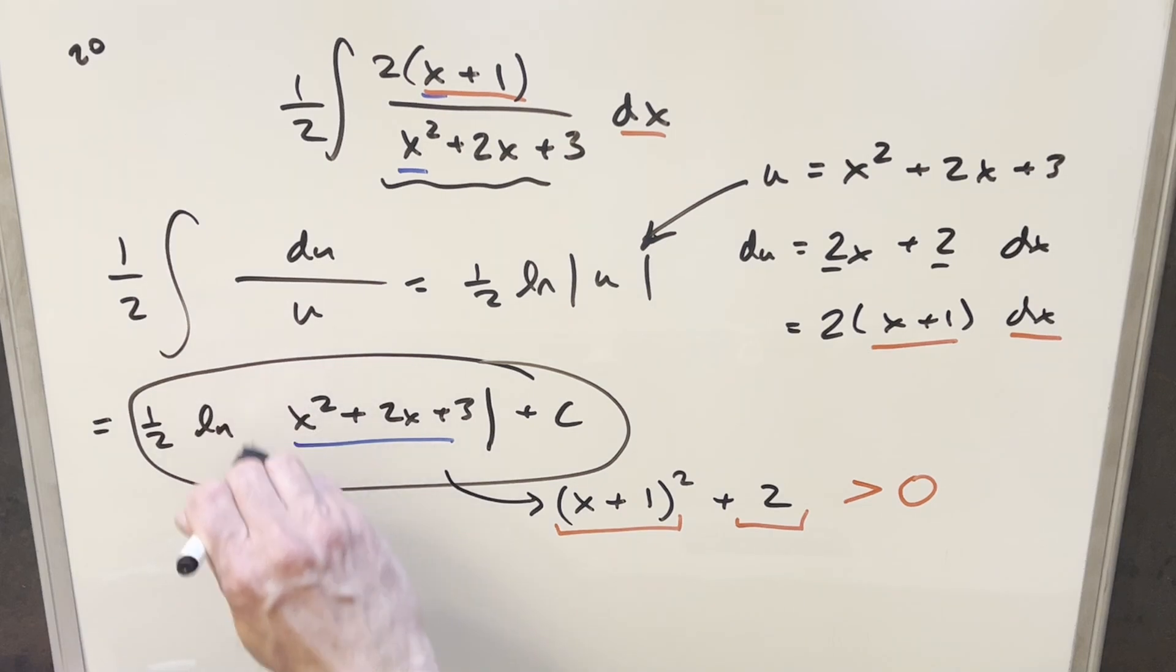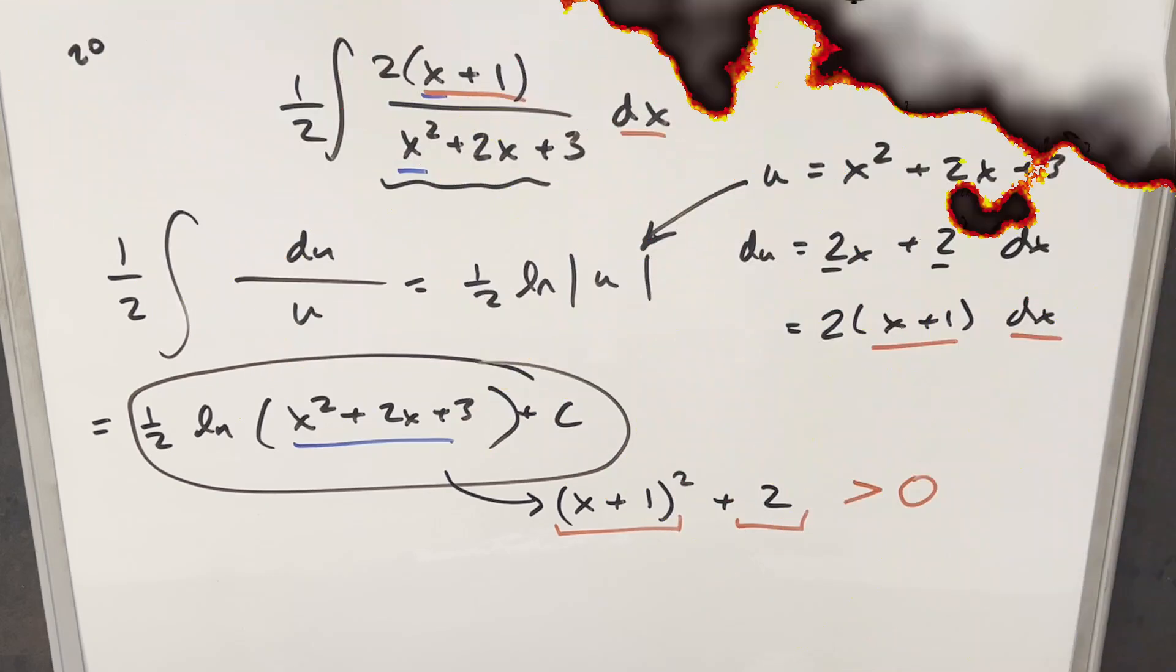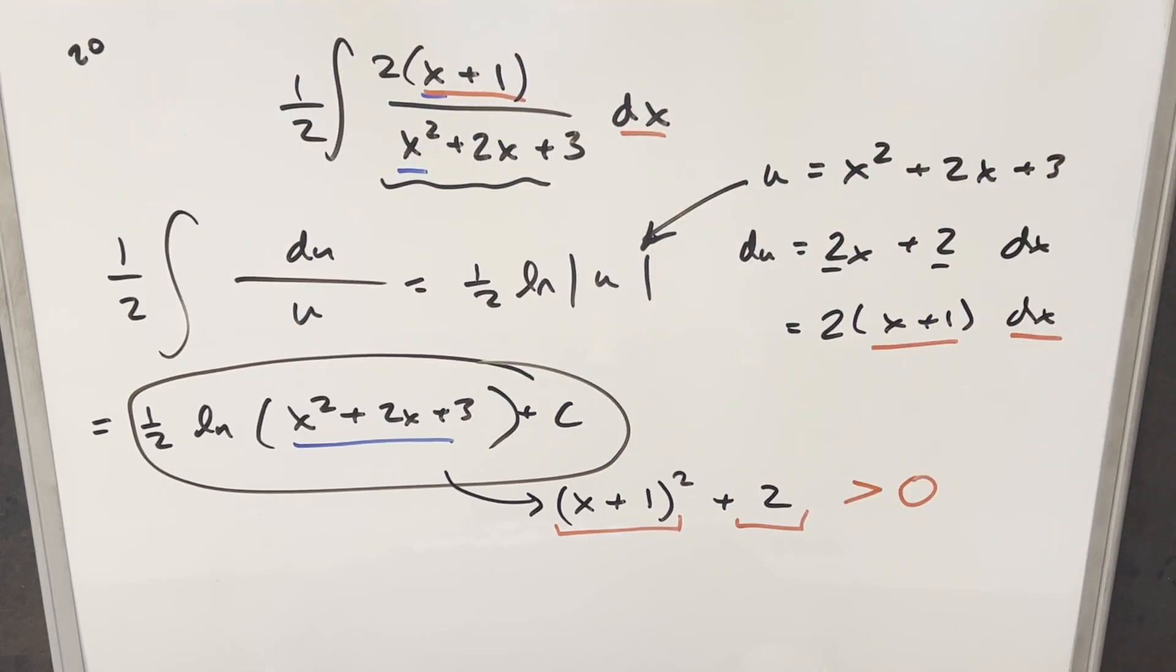So what I'll do is I'll just drop my absolute value here, get rid of that. We'll write this as parentheses, and that's it. Okay, so there you have it. Quick and easy one from MIT 2015. Thanks everyone for watching. Have a good day.